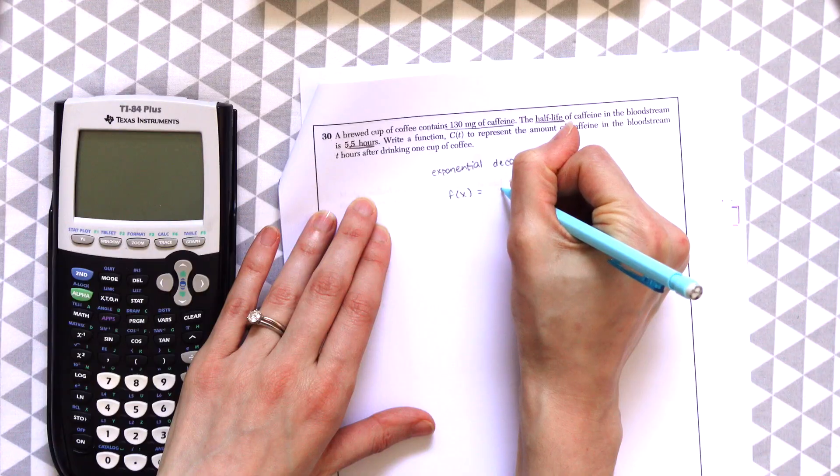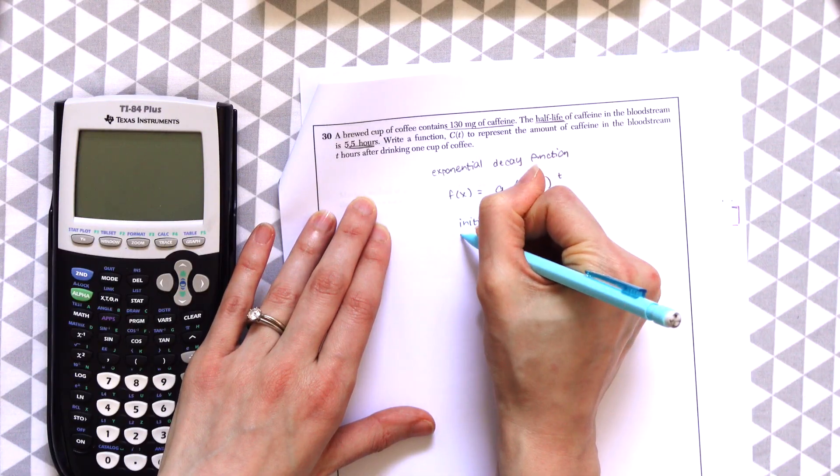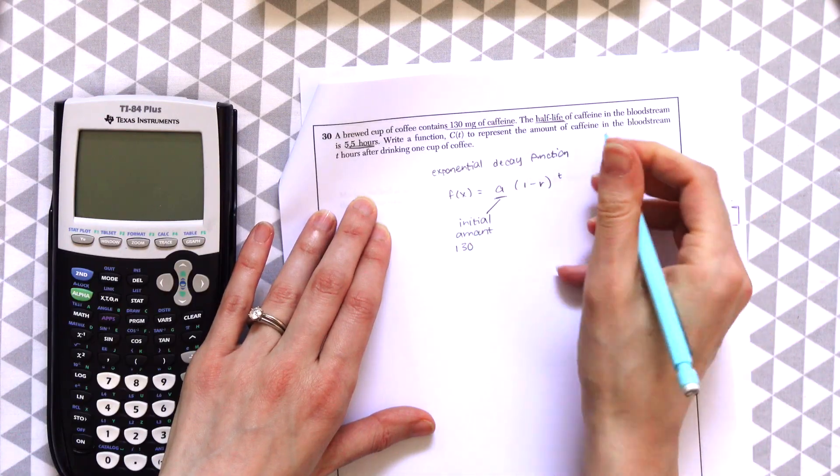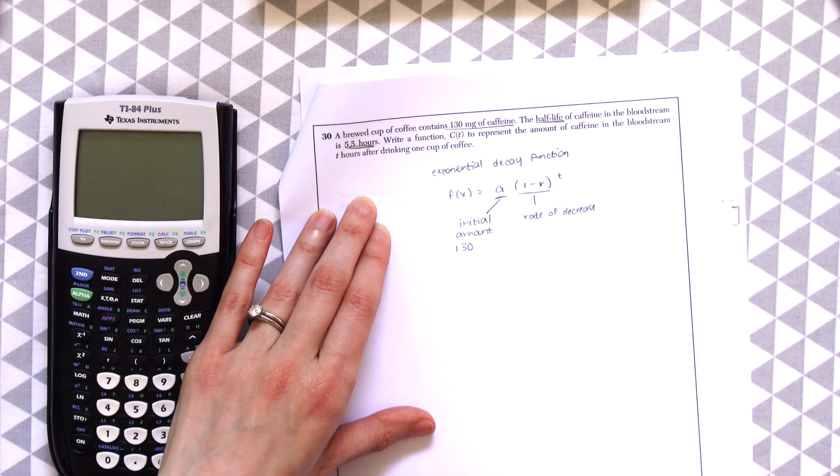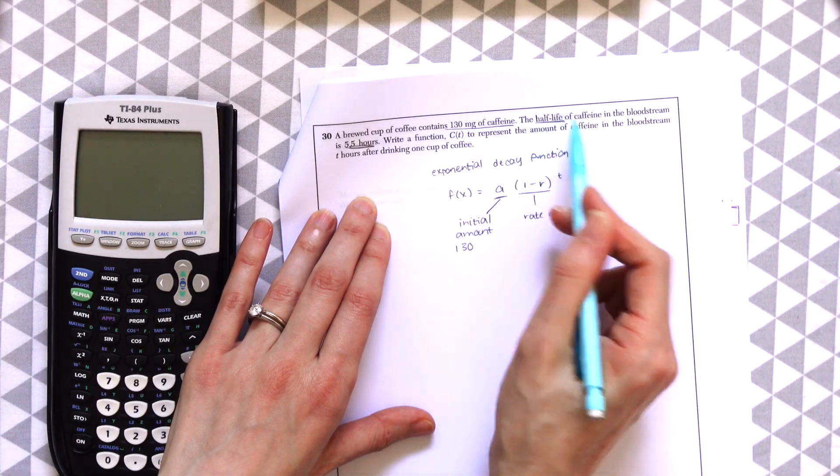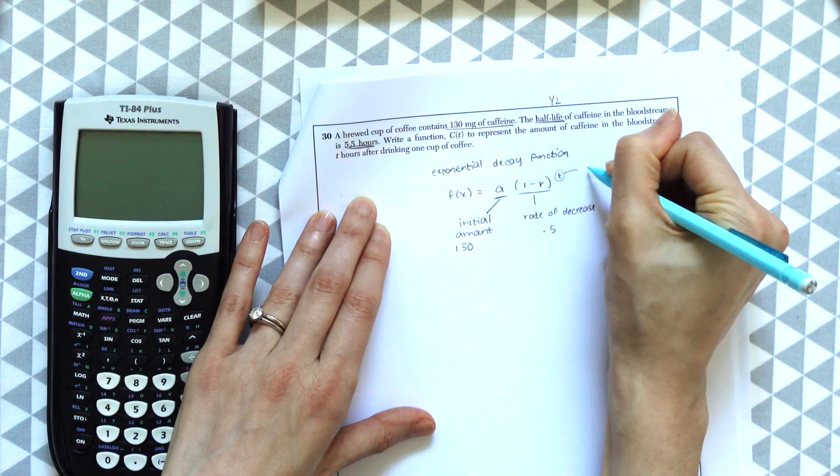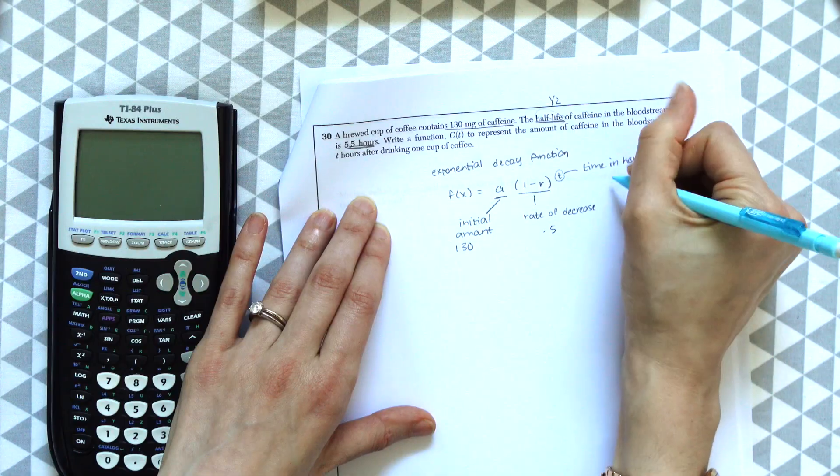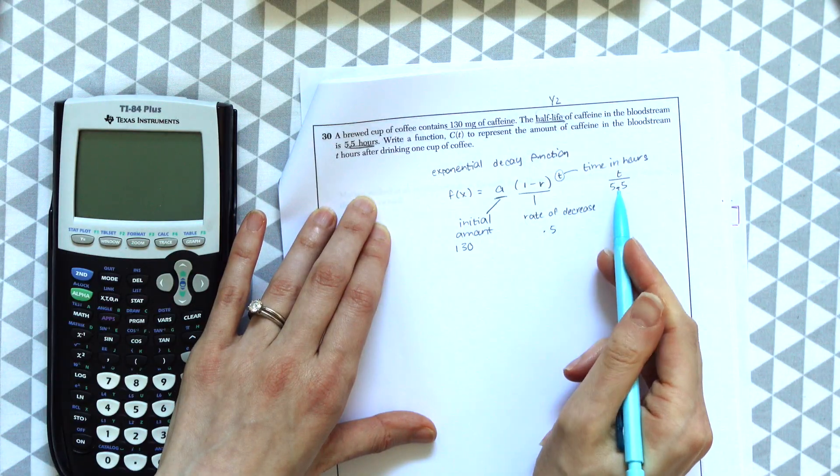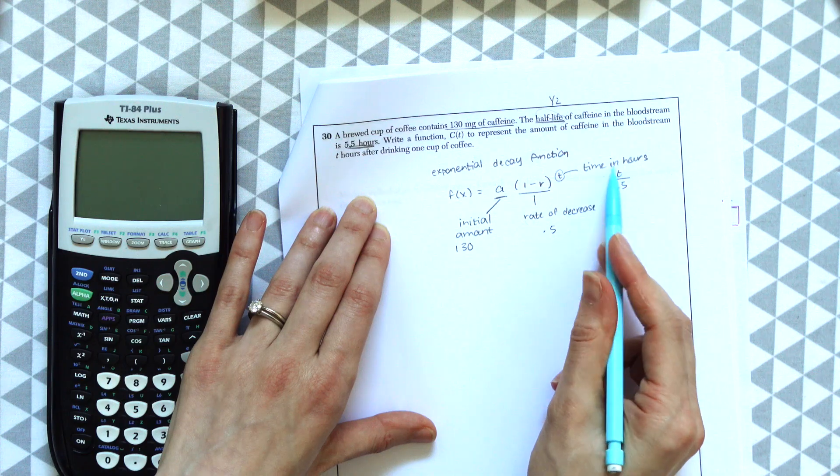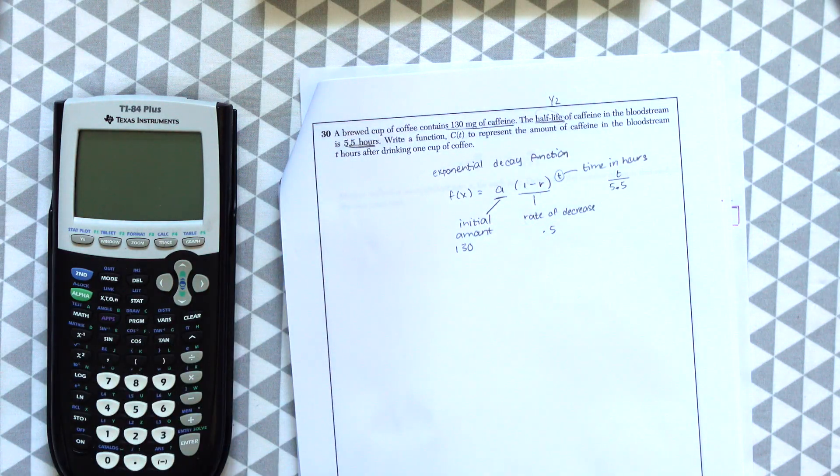So knowing that we can write a little exponential decay function. There's a formula for that. F of x equals a times one minus r to the t where a is our initial value, our initial amount of caffeine, which we know was 130 milligrams. And then r, one minus r is the rate of decrease. They didn't give us a specific number, but they said the words half-life, which means this is going to half. So we know the rate is going to be 0.5. And then t is the time in hours. You have to be careful about this. Whatever time in hours we're given, we're going to be dividing it by 5.5 because we want to know when this does half, it would be every five and a half hours.